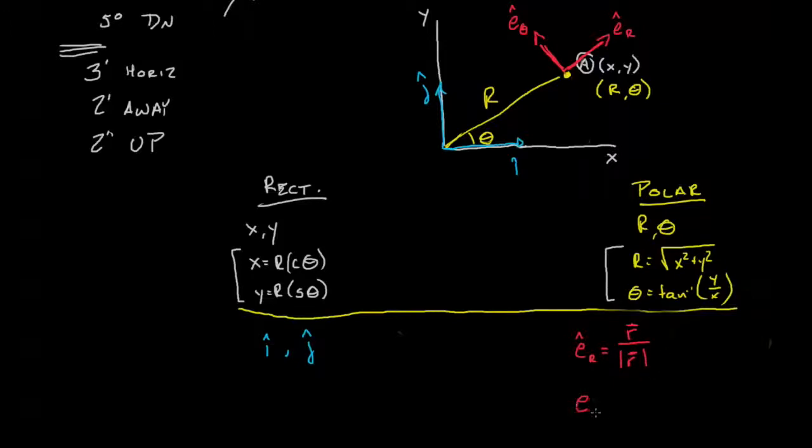Likewise, this is one of my favorite little equations, is the unit vector in the theta direction is perpendicular to that in the r direction, so k cross the radial unit vector. These two terms define the unit vector for polar coordinates.